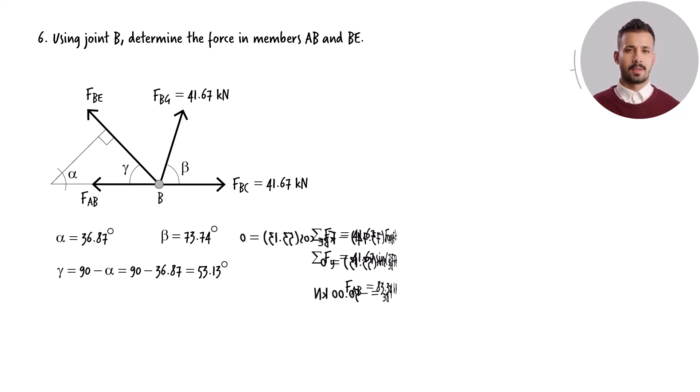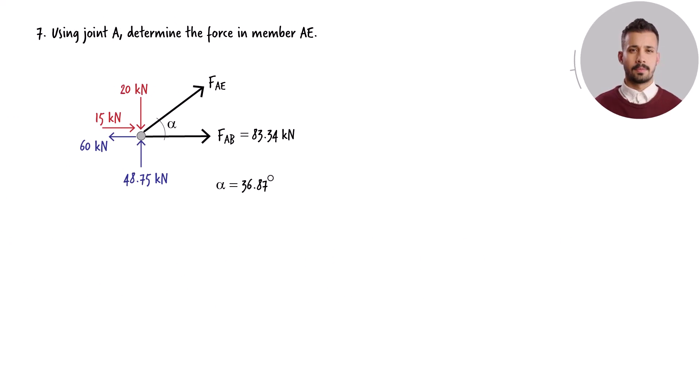Finally, we consider joint A. At this point, only one unknown member force remains, FAE. To determine this force, we need one equilibrium equation. We can use either of these two equations to determine the unknown force.